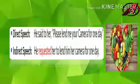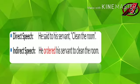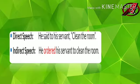Next example. Direct speech: 'He said to his servant, clean the room.' It's an order. So simply change 'said to' to 'ordered.' This is the easiest form of transformation of direct speech to indirect speech for exclamatory and imperative sentences. Simply identify the sentence first — is it an order sentence, a request sentence, or a command sentence? Then accordingly use 'ordered,' 'requested,' or 'commanded' in place of 'said to.'